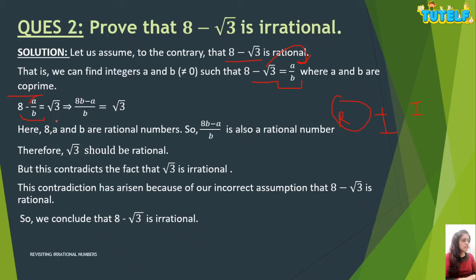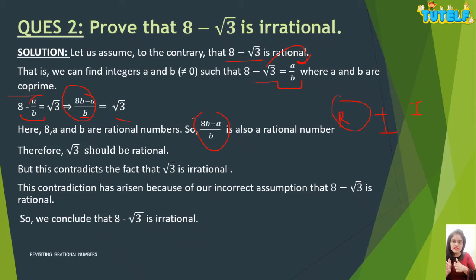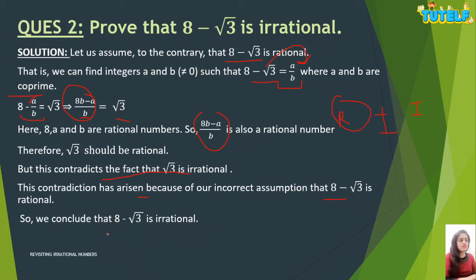Taking the LCM, you get 8B minus A upon B equals root 3. We know that 8, A and B are rational numbers, so 8B minus A upon B is also a rational number. Since LHS equals RHS, if one side is rational the other side should also be rational. But this contradicts the fact that root 3 is irrational. This contradiction arose because of the incorrect assumption that 8 minus root 3 is rational, so we conclude that 8 minus root 3 is irrational.